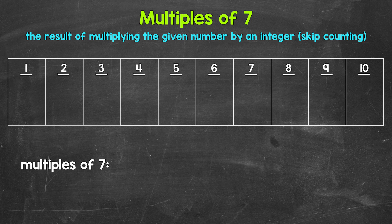Now remember, a multiple is the result of multiplying the given number by an integer. So one times seven, two times seven, three times seven, so on and so forth.